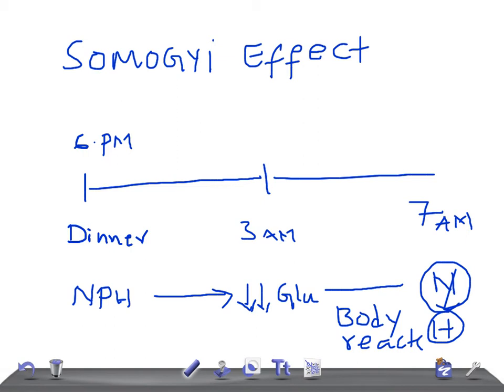I think you understand what the Somogyi effect is. What's the treatment for this? How would you treat it? Simply decrease the dose of NPH. Decrease the dose of NPH — that's the treatment. Not increase the NPH.